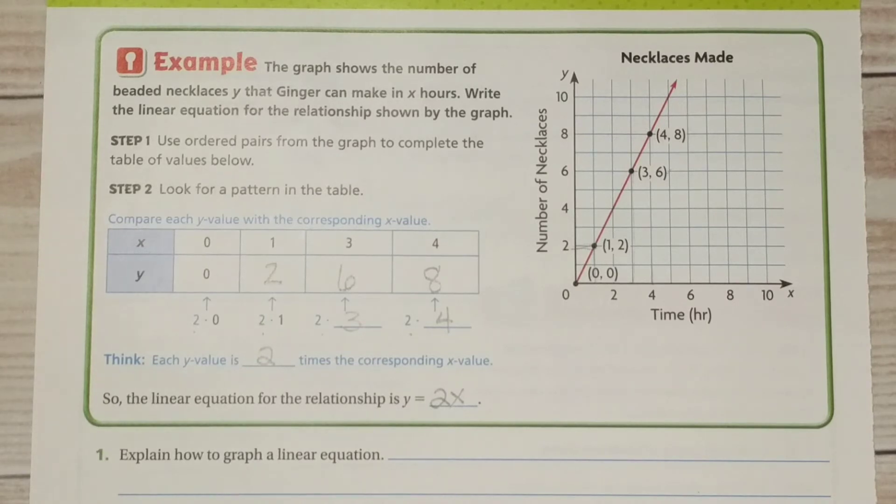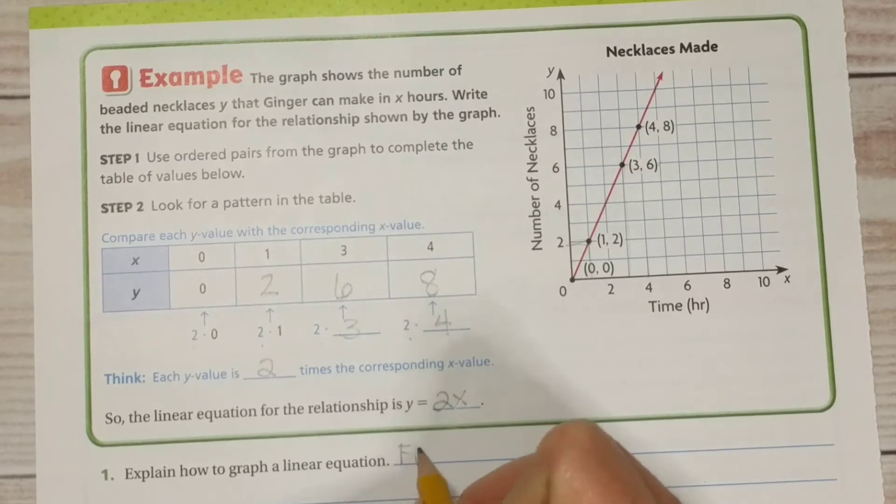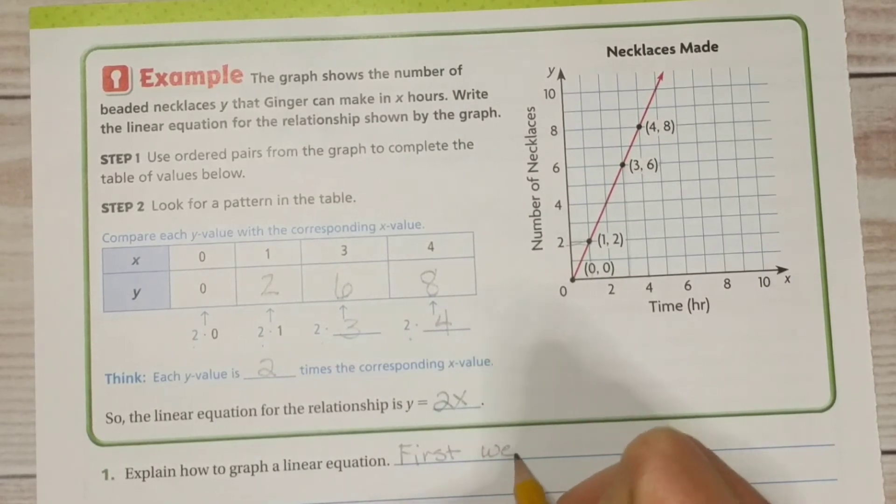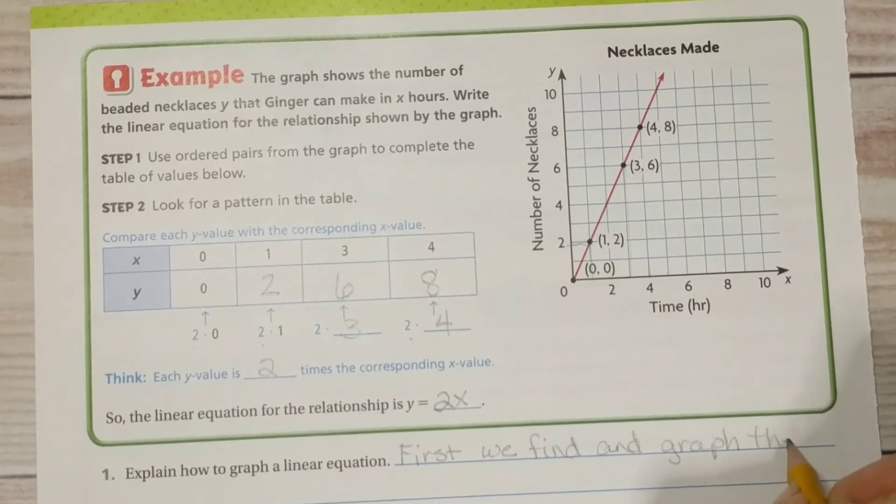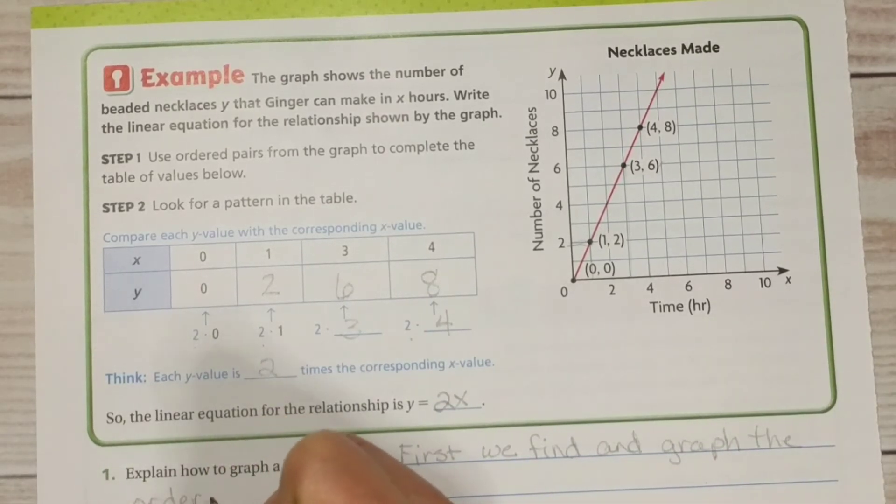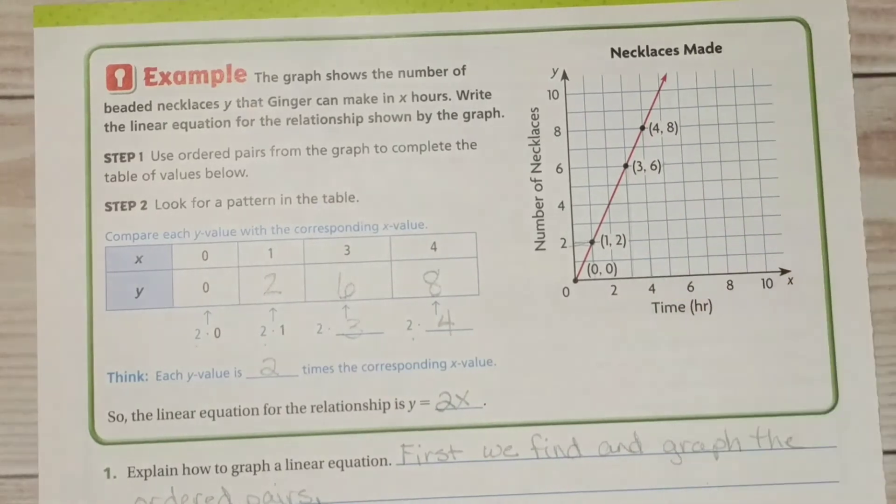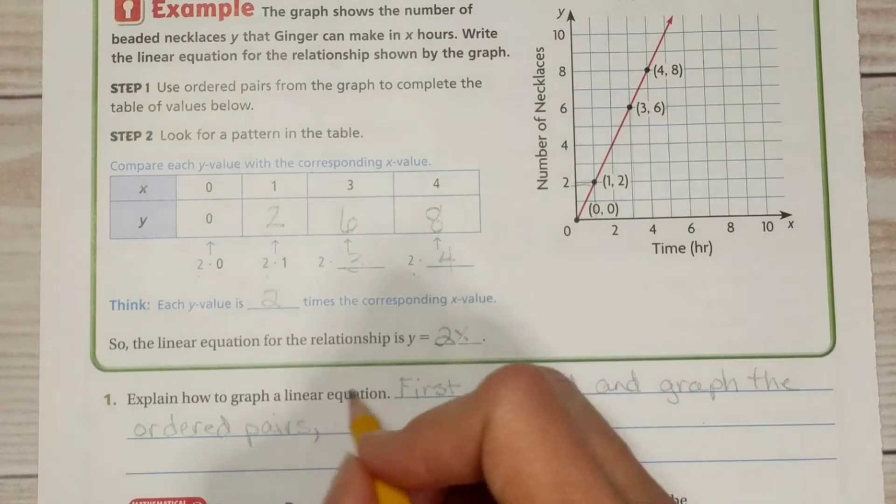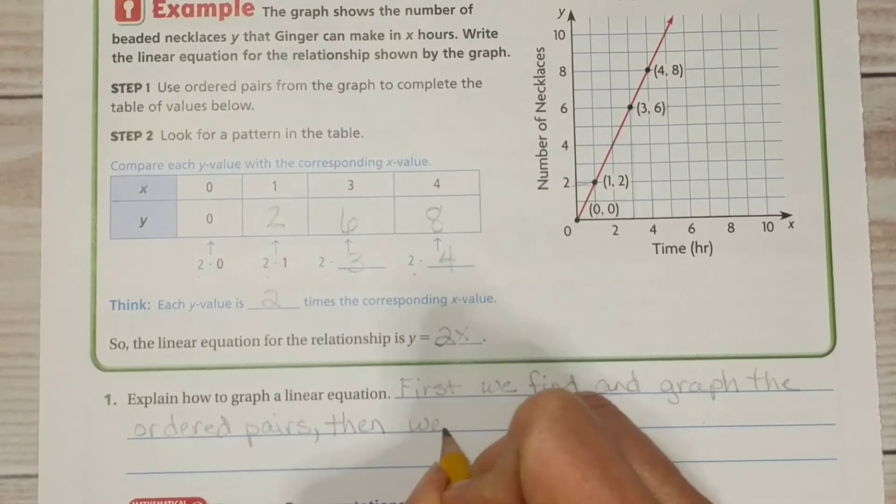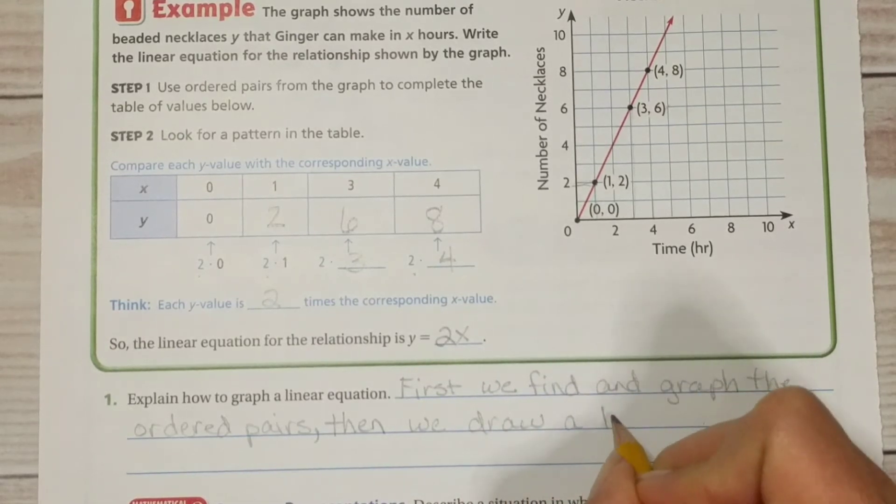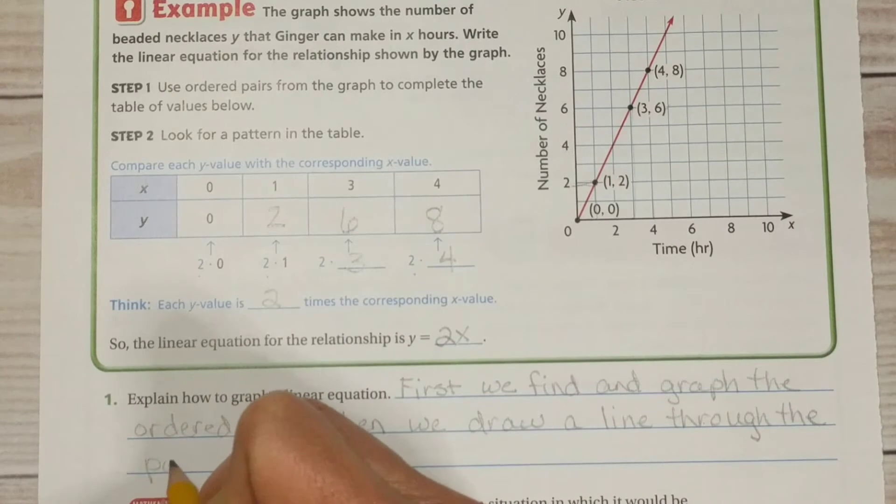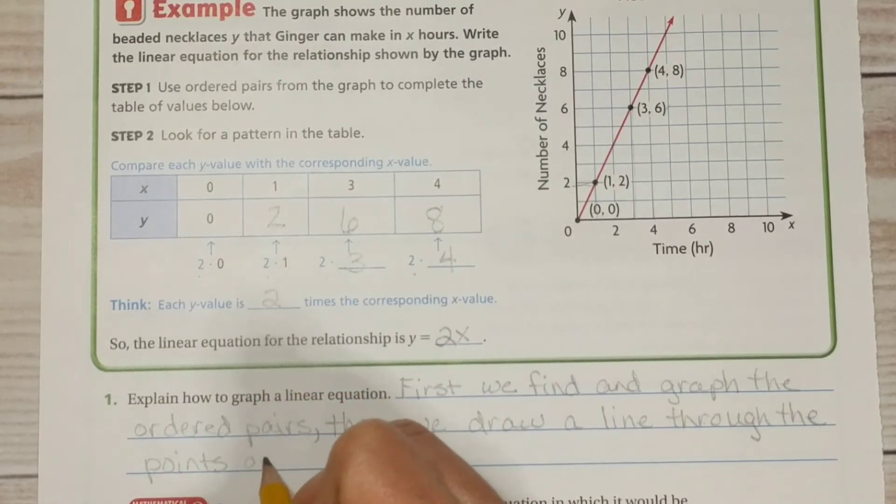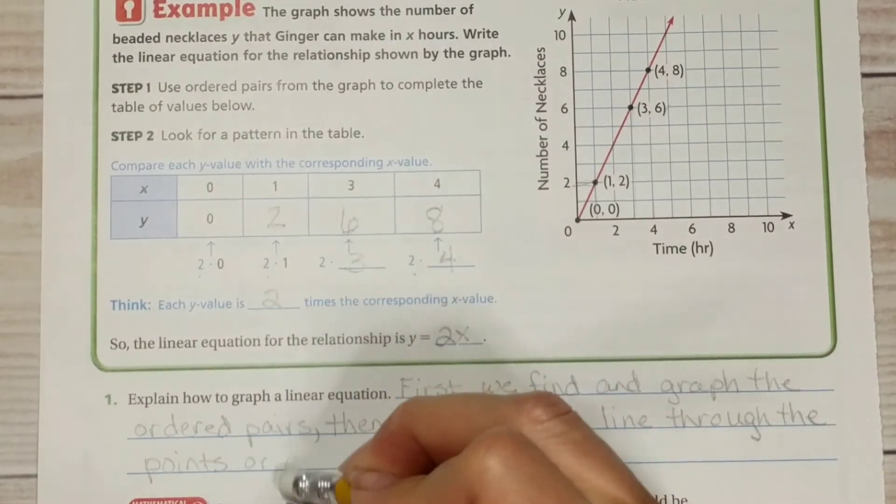First, we find and graph the ordered pairs. These are the ordered pairs. Then we draw a line through the points or let's see let's spell that correctly ordered pairs.